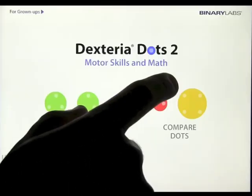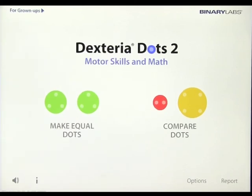So it's great, it's another app by Binary Labs that is just outstanding like all of the other apps. It's called Dexteria Dots 2, Motor Skills and Math. It works on visual tracking, fine motor, visual memory, and visual motor planning, as well as basic math skills.